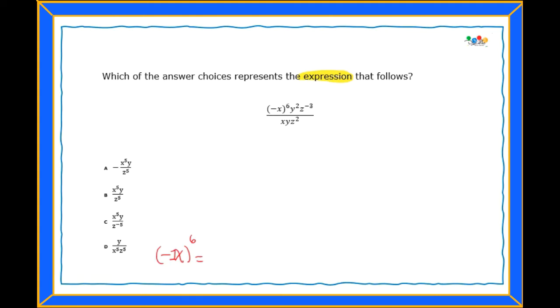Now there's a rule that says that if your base is negative and the exponent is an even number, my answer will always be a positive answer. But if my base is negative and my exponent is an odd number, like a 3 or a 5, then my answer will be a negative answer. This is an even number, therefore my answer is x to the sixth power.